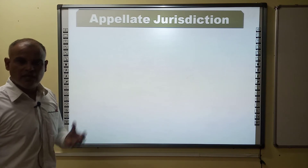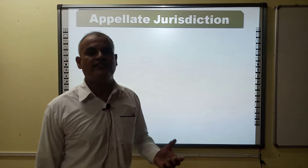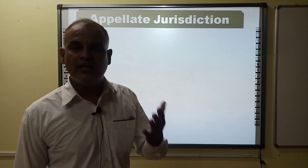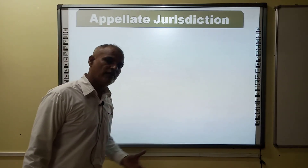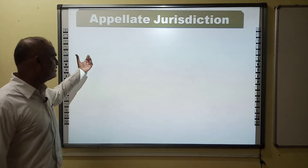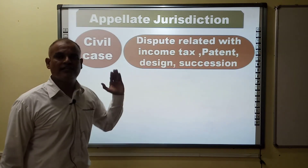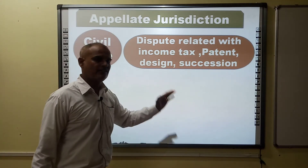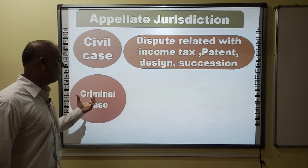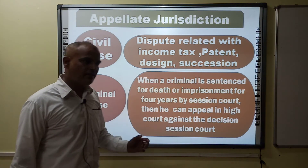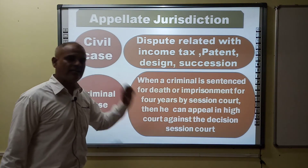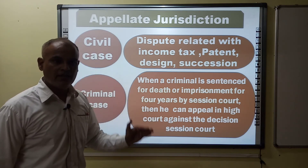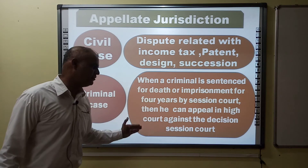Regarding appellate jurisdiction — if a person is not satisfied with the decision of a lower court, then he or she can file their case in the High Court against the decision of the lower court or Session Court. The first category is civil cases, which include disputes related to income tax, patent, design, and succession. The second category is criminal cases — where a criminal is sentenced to death or imprisoned for four years by the Session Court, then he can appeal in the High Court against that decision.